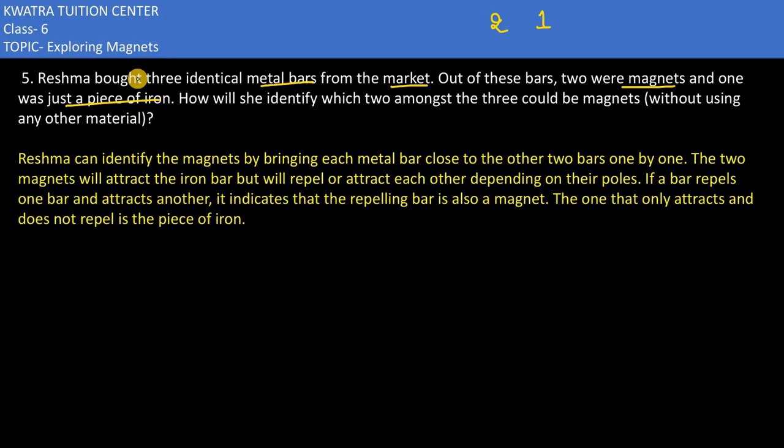She can identify the magnets by bringing each metal bar close to the other two bars one by one. That's why she has three things.